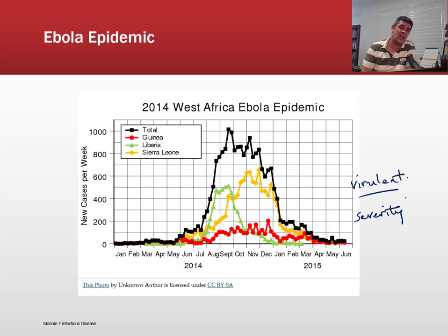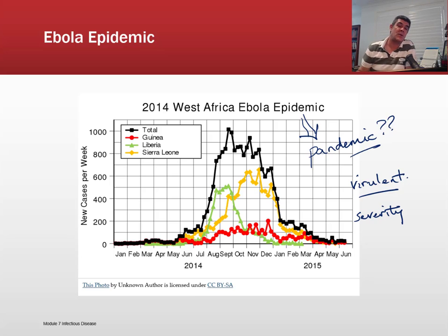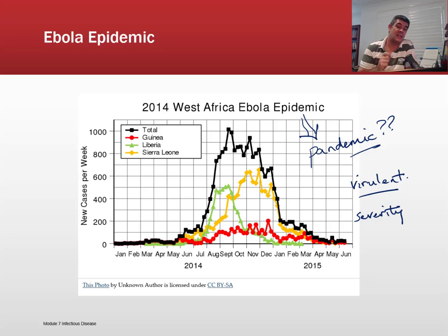This is an interesting case study in why not all epidemics in the 21st century become pandemics — why didn't Ebola develop into a pandemic? These are questions we want to ask ourselves when studying diseases: what limits some diseases to localised regions while others become globally widespread?